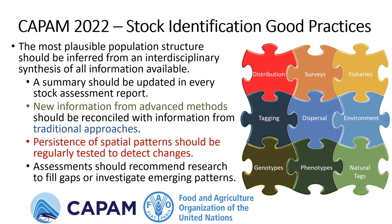I'll start where we ended off last fall at the CAPM workshop on good practices for stock assessment. In terms of stock identification, we concluded that the most plausible population structure should be inferred from interdisciplinary synthesis of all information. We have a variety of tools in the toolbox for stock identification. They each tell us something distinct about the population structure, but no single tool gives us the whole picture, so we really need to integrate information from all of these different approaches. We should summarize the information available in every stock assessment report, and if there's any new information that's become available, we should try to reconcile that with traditional approaches.